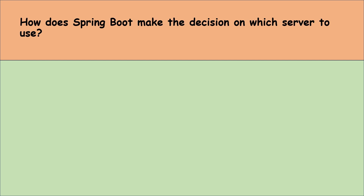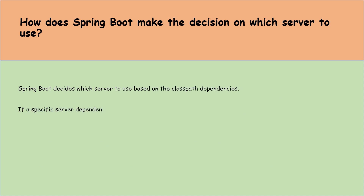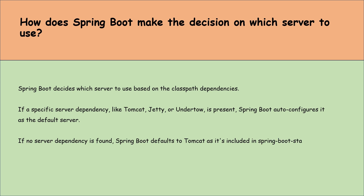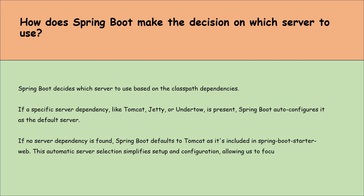How does Spring Boot make the decision on which server to use? Spring Boot decides which server to use based on the classpath dependencies. If a specific server dependency like Tomcat, Jetty, or Undertow is present, Spring Boot auto-configures it as the default server. If no server dependency is found, Spring Boot defaults to Tomcat as it's included in spring-boot-starter-web. This automatic server selection simplifies setup and configuration, allowing us to focus more on developing the application rather than configuring server details.